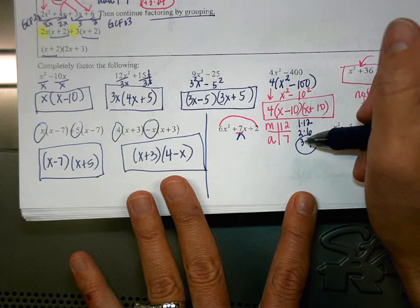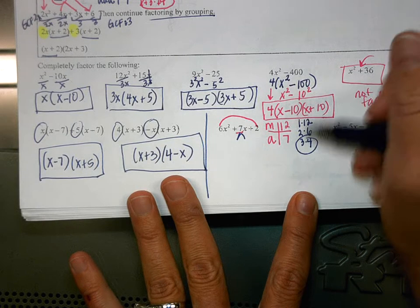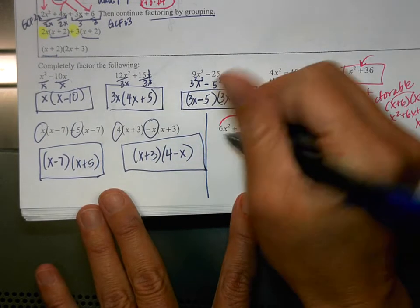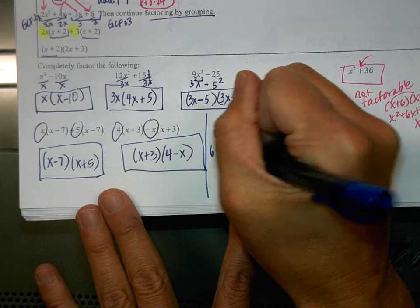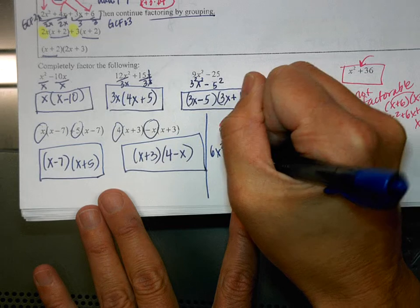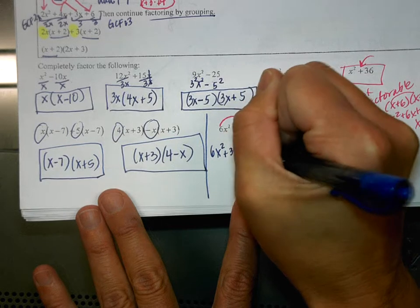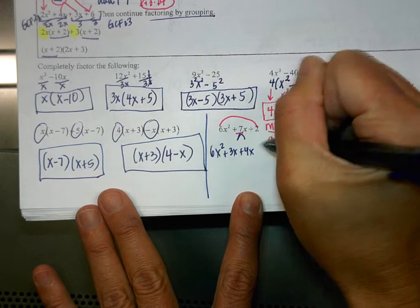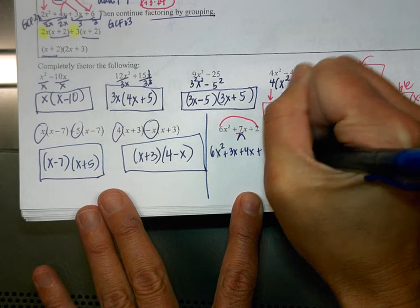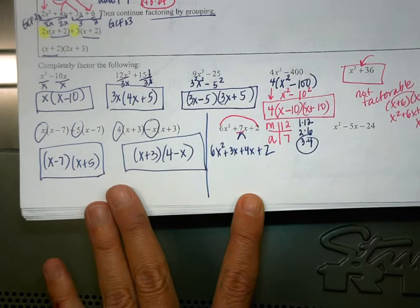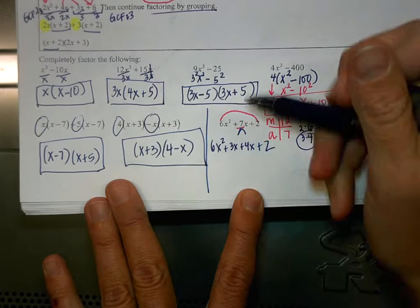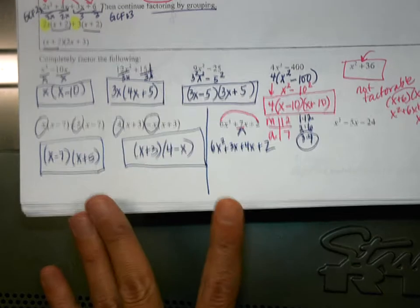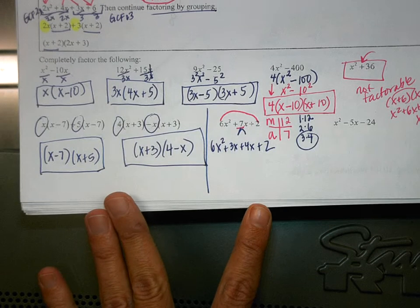Start with 1, then go to 2, then go to 3, and keep going through the list. So we have 6x squared plus 3x plus 4x plus 2. The 7x got split into 3x and 4x.